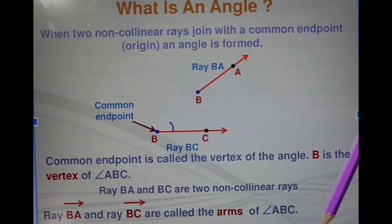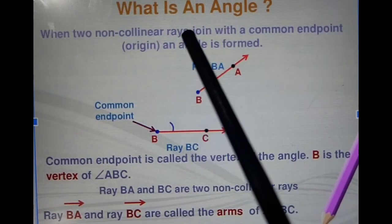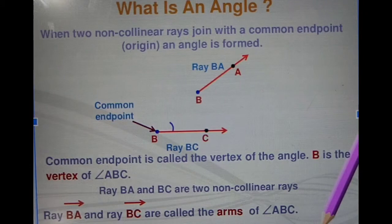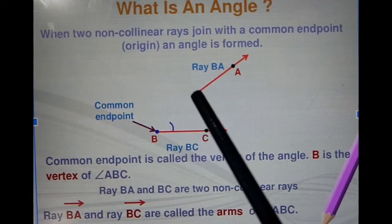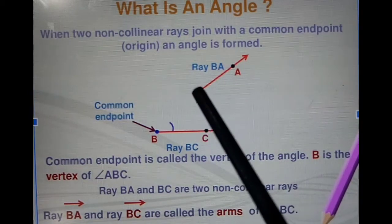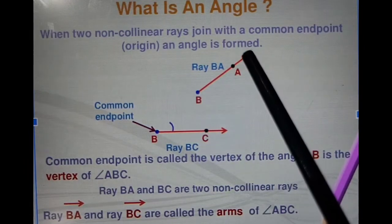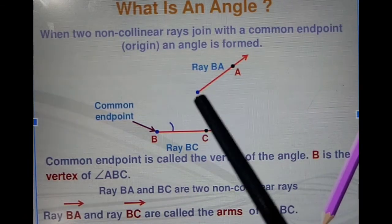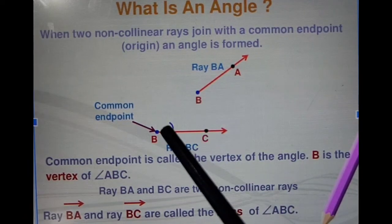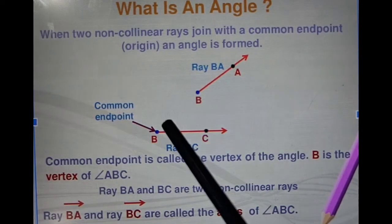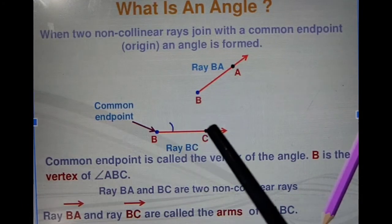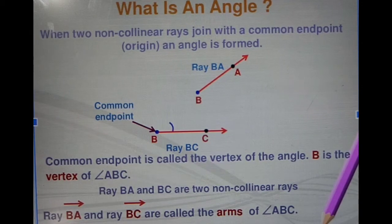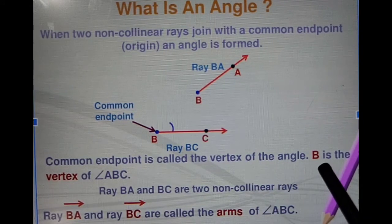Now understand the next slide. When two non-collinear rays — non-collinear means which are not in the same line — join with a common end point, we get an angle. These are two rays which have one fixed point and the second end goes to infinity. With ray BA and ray BC sharing common point B, we get an angle. The common end point is called the vertex of the angle.